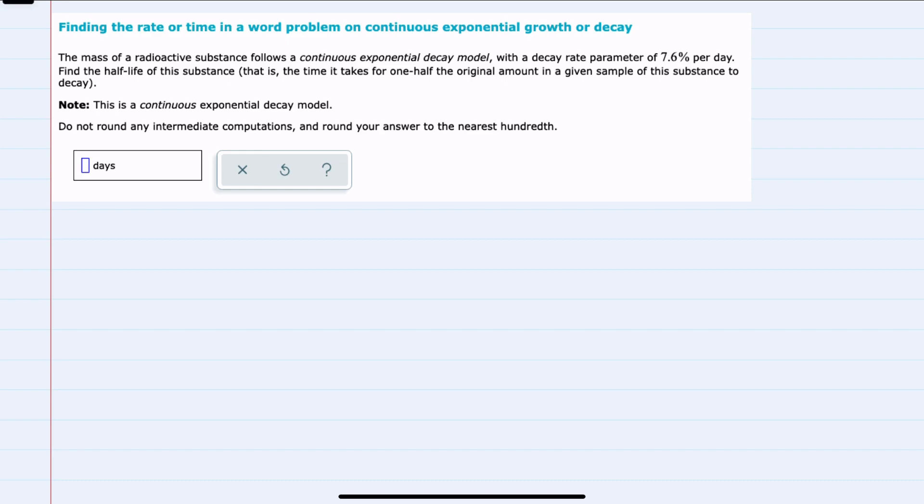In this example we have the mass of a radioactive substance that has continuous exponential decay at a rate of 7.6% per day and we are looking for the half-life of this substance.